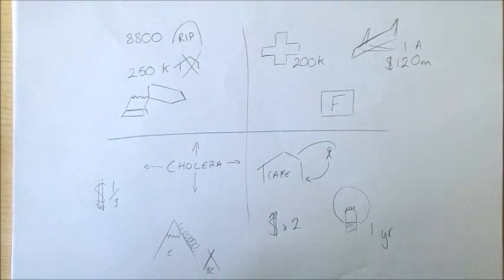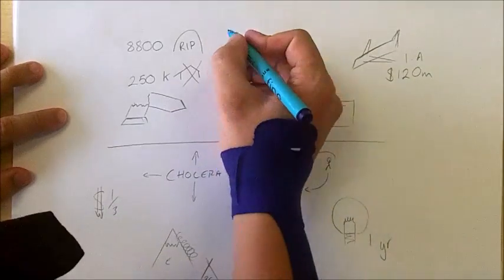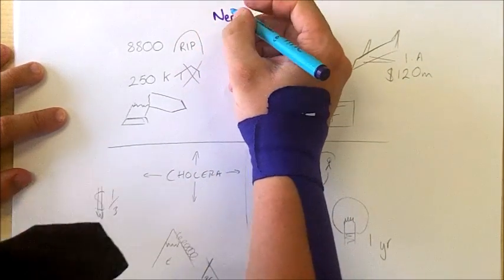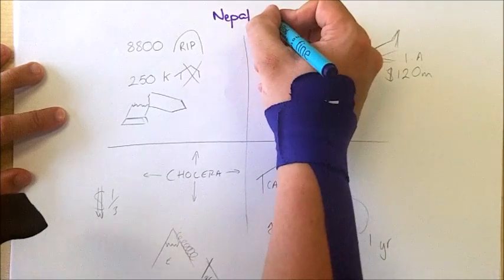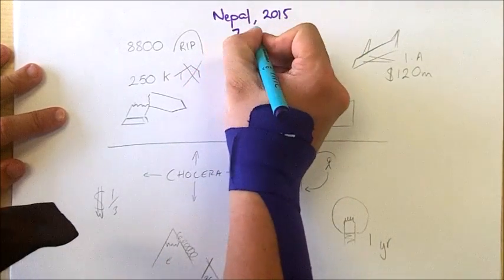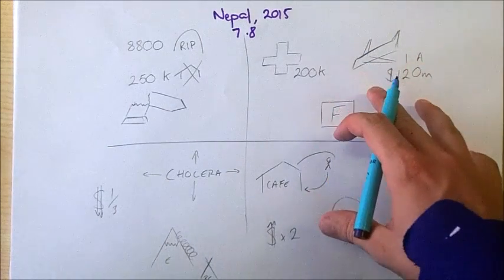Okay, so our second earthquake case study that we're going to look at is the Nepal earthquake. It occurred back in April 2015 and was a 7.8 magnitude earthquake on the Richter scale.